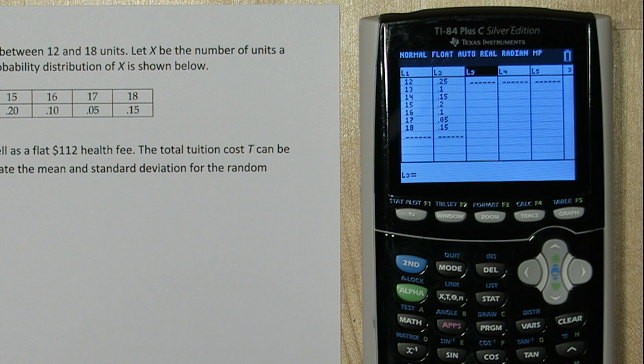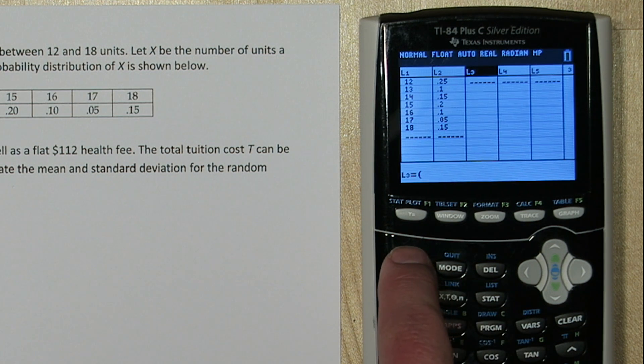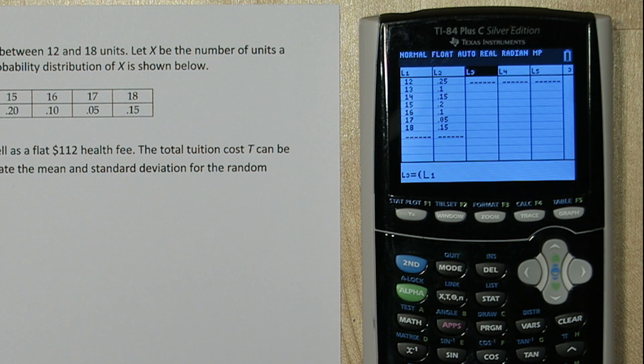So what we're going to do is take list 1, so I'll press 2nd and 1, and multiply it by 460. Then add 112. Now list 3 represents the total tuition cost paid by students for these different numbers of units.